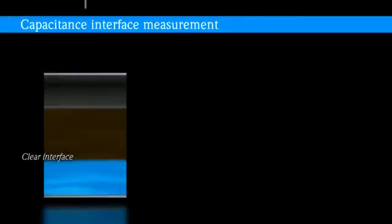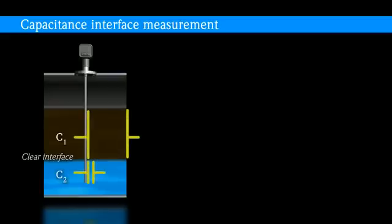In capacitance measurement, the probe and the tank form a capacitor. Due to different dielectric constants of the two media, the measured capacity change of the upper medium, typically the less conductive media, for example oil,